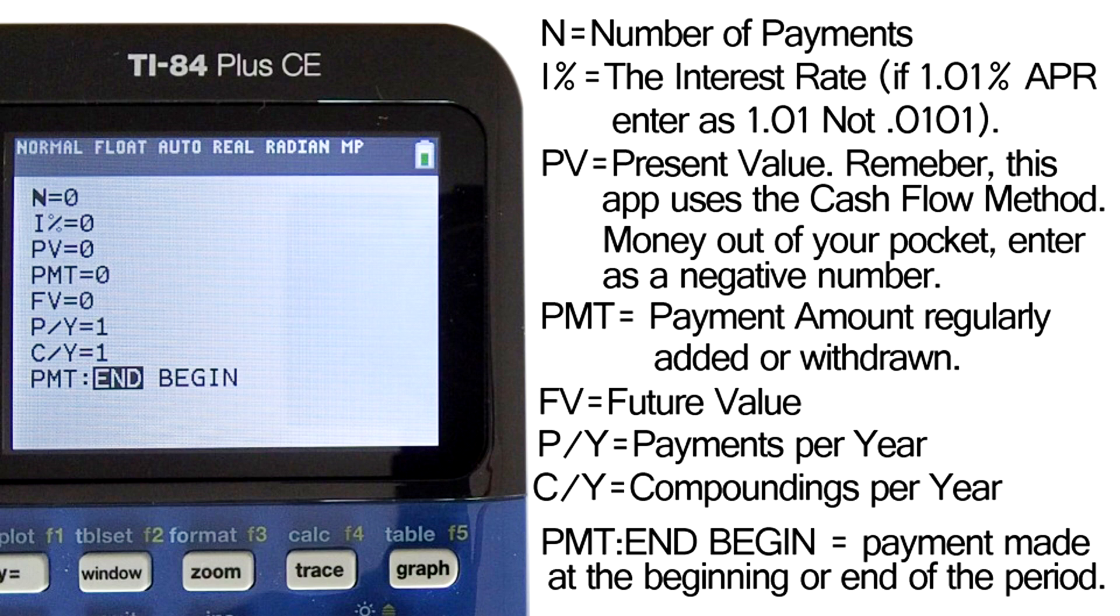P/Y is payments per year and is closely related to the next one, C/Y, compoundings per year. If the interest is compounded daily, then enter 365 for both P/Y and C/Y. If interest is compounded monthly, then enter 12 for both P/Y and C/Y.